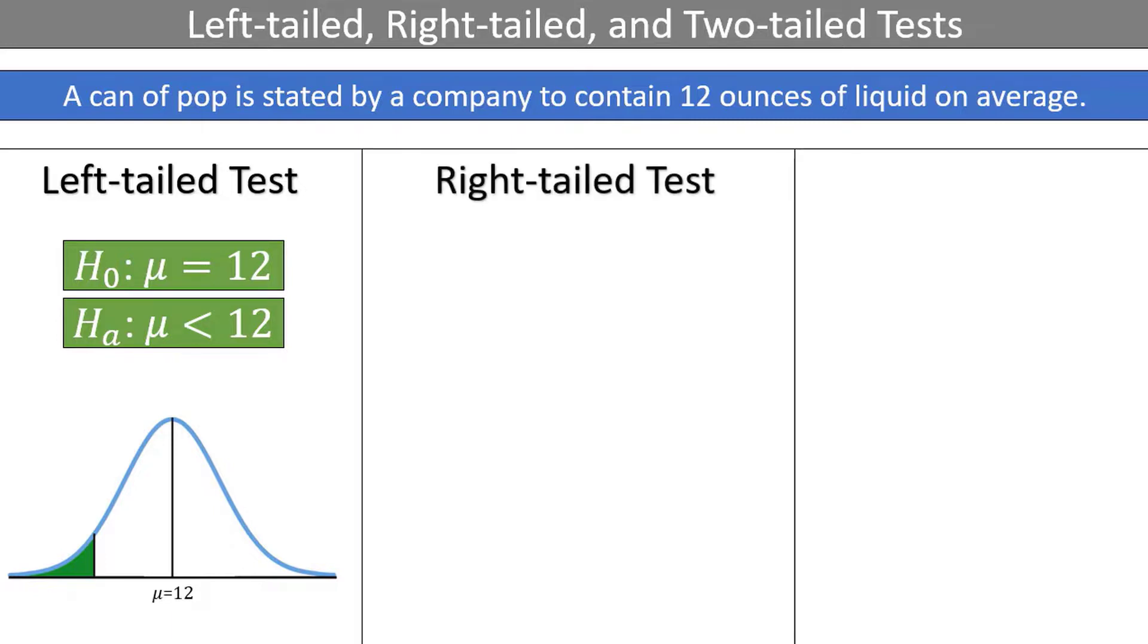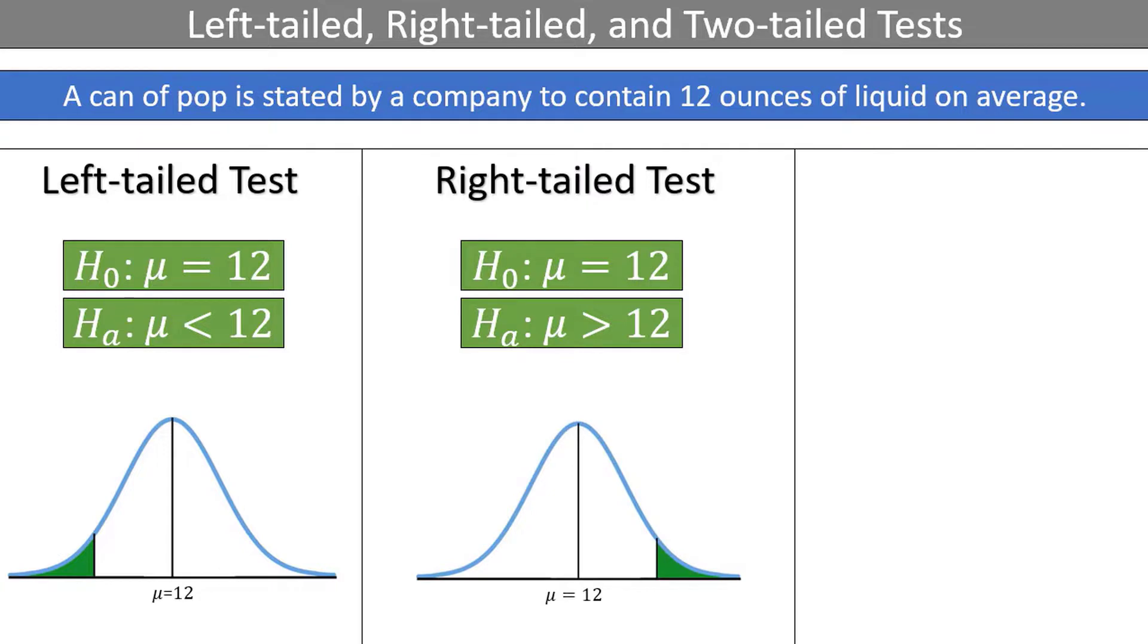A right-tailed test is the same thing, except now we believe that the population parameter is greater than some stated amount. The null hypothesis is the same, but the alternative hypothesis is that mu is greater than 12. We only reject the null hypothesis in favor of the alternative if our sample reveals a mean in the extreme right tail of the distribution.